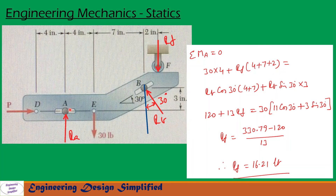Now let us take moments about A. R_A creates no moment about A since it acts at A, and P also creates no moment about A since it acts along that line. The 30 LB force creates a clockwise moment, R_B creates a counterclockwise moment, and R_F creates a clockwise moment about A. Writing sigma M_A equals 0: 30 times 4 plus R_F times (4 plus 7 plus 2) equals the counterclockwise moment from R_B.